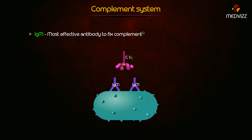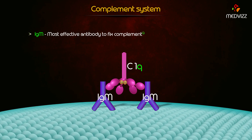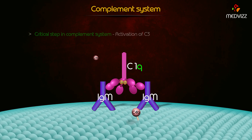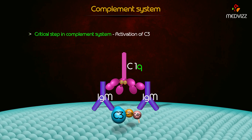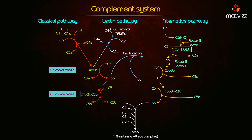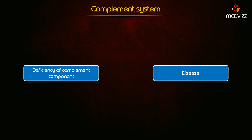IgM is the most effective antibody to fix complement. The critical step in the complement system is the activation of C3. All three pathways converge to form the membrane attack complex, which is responsible for lysis.